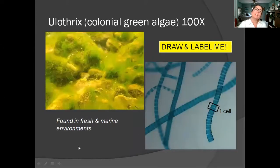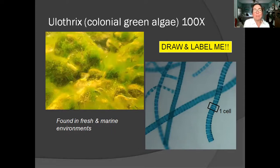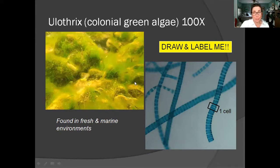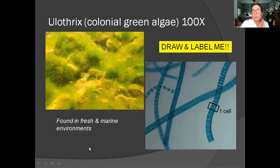This is ulothrix, and it might look familiar because there's a lot of this algae around where we live. It makes rocks look almost hairy, and when you step on them they're really slippery and slimy because they make a capsule. One cell of ulothrix looks like that, but they love to form really long filaments as part of a colony. They're actually green — this is just the particular stain on this slide.